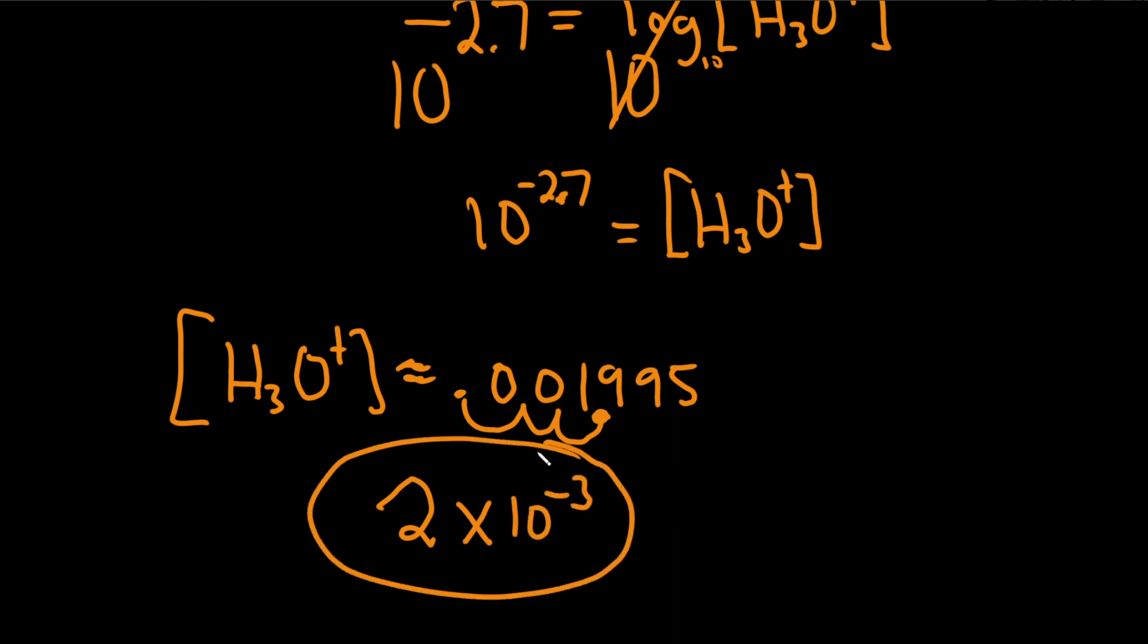That would be the hydronium ion concentration. If you like, you can round it first, and then count 1, 2, 3. That's how you get the negative 3. And that would be your hydronium ion concentration. Good luck.